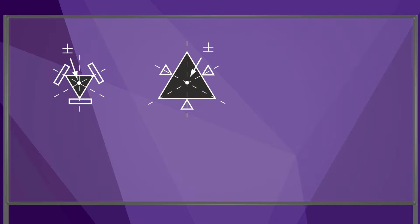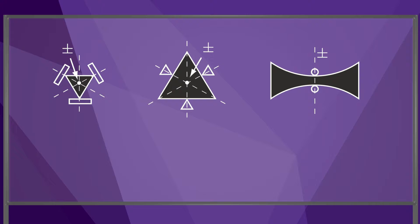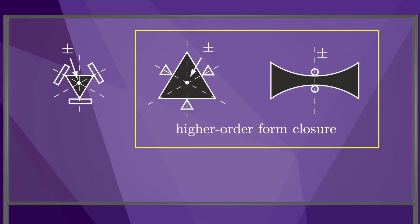The planar triangle shown here is not in form closure because the full rank condition is not satisfied. The three contact normals cannot prevent pure rotation about the center of the triangle. Similarly, a first-order analysis tells us that this large triangle is also not in form closure because the graphical contact analysis does not rule out rotation about the center of the triangle. A first-order analysis also indicates that this concave body can rotate about any rotation center on the vertical line. In fact, however, both the large triangle and the concave body are in form closure by a more detailed analysis of the contact geometry, while the small triangle still is not.